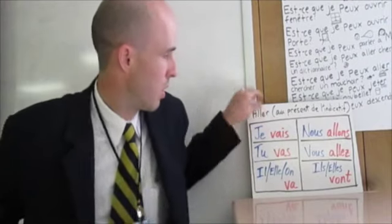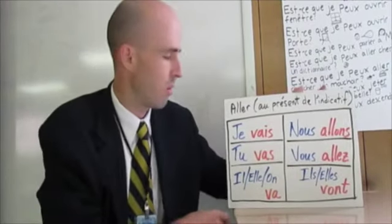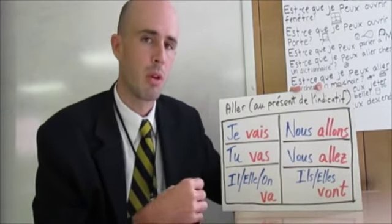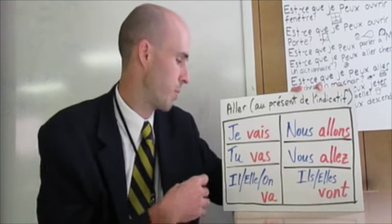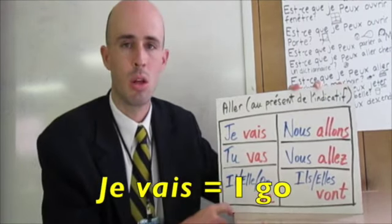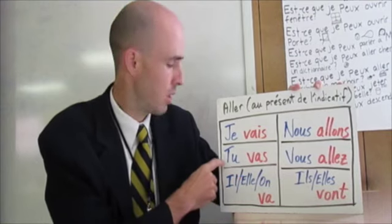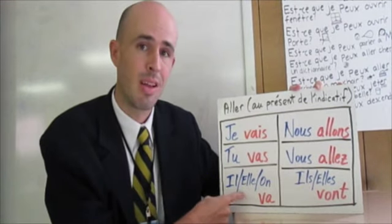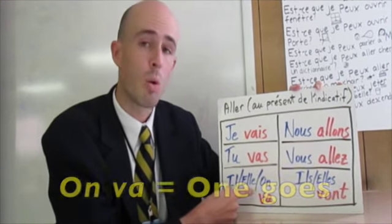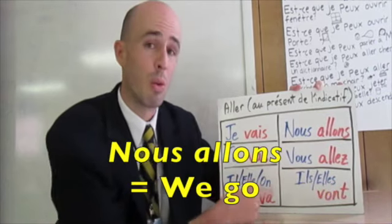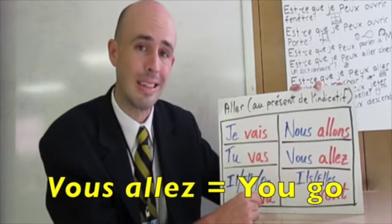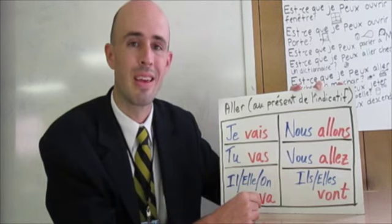Here are the forms of the verb aller conjugated in the present tense — first, second, and third person, singular and plural. Listen carefully and repeat with me: je vais, tu vas, il va, elle va, on va, nous allons, vous allez, ils vont, elles vont.